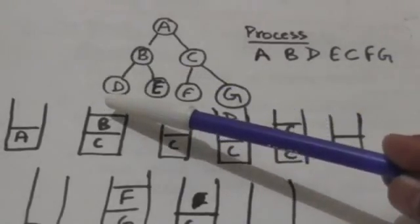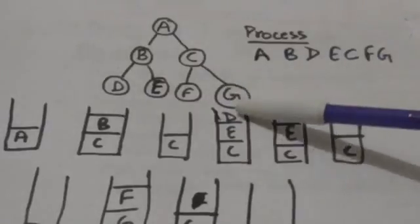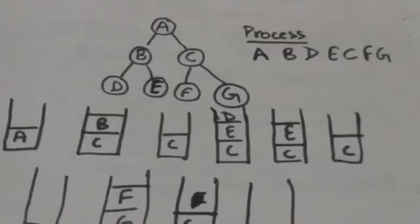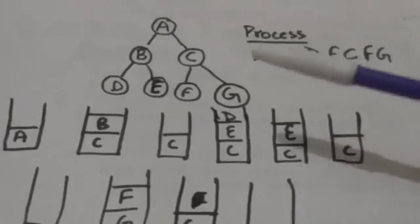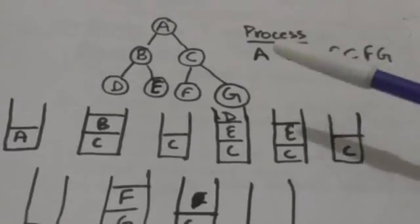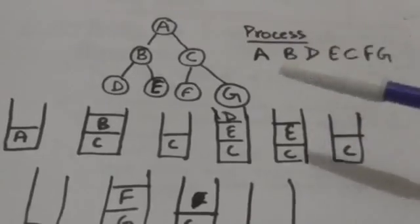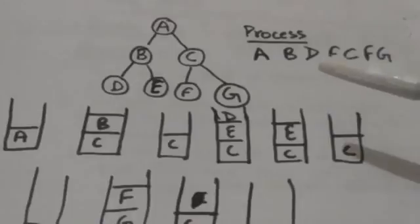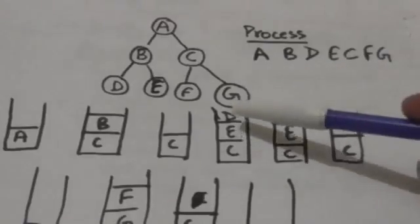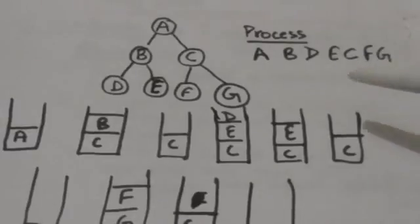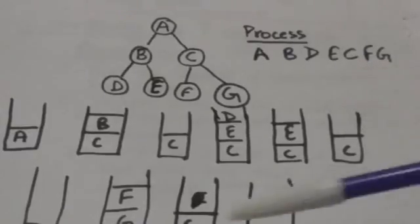We push the right child of node B and then the left child of node B — that is D — into the stack. After this we will pop the top element from the stack, that is node D, and process it. Node D doesn't have any child, so there is nothing to push into the stack.